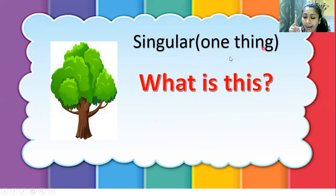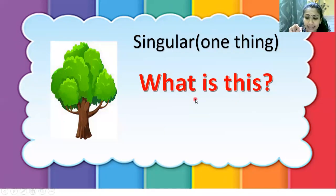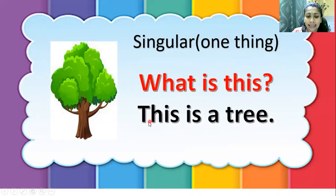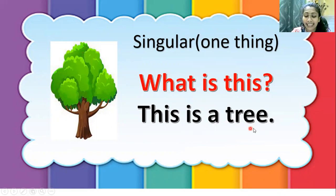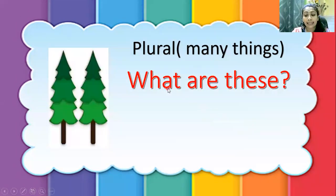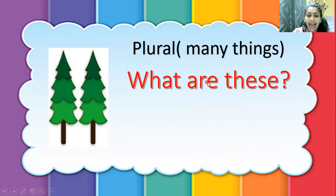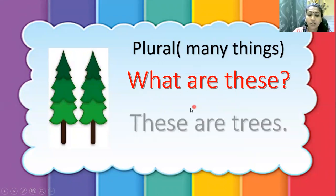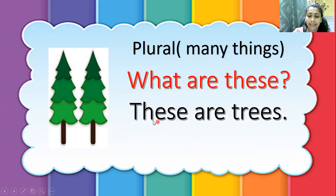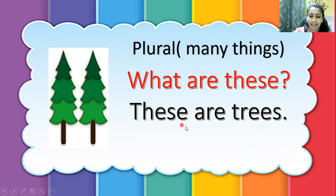Singular means one thing. For every one object, you use the word 'this.' So the question sounds: What is this? And the answer is: This is a tree. Now let's see the usage of plural. Plural means many things. What are these? You see, teacher uses 'are' for plural, not 'is.' So what are these? The answer is: These are trees. I use T-H-E-S-E — these.